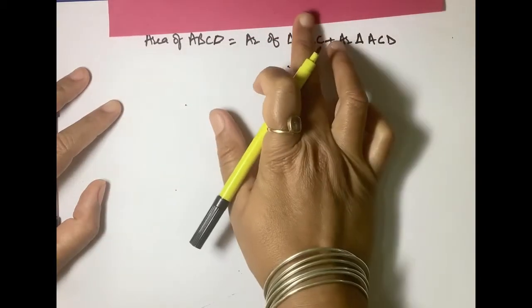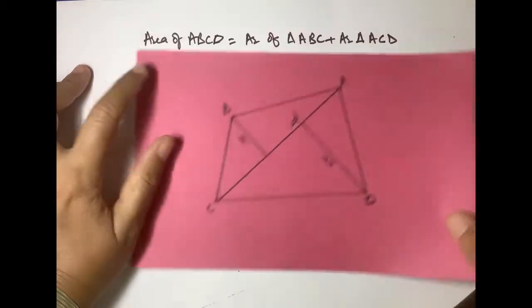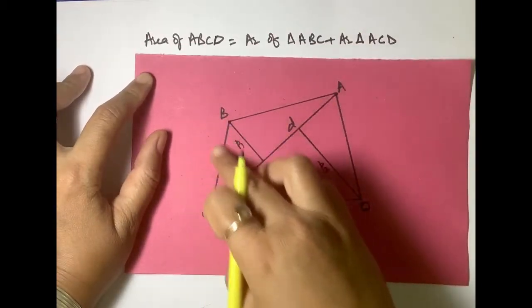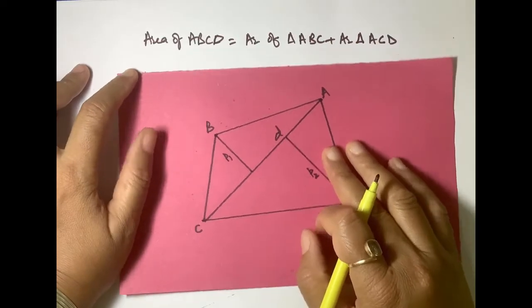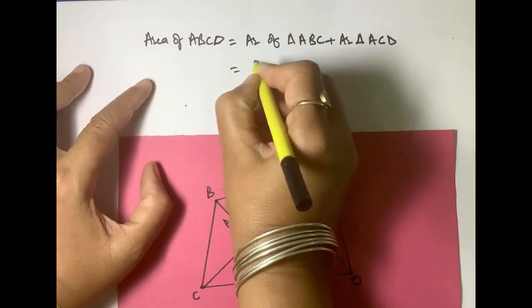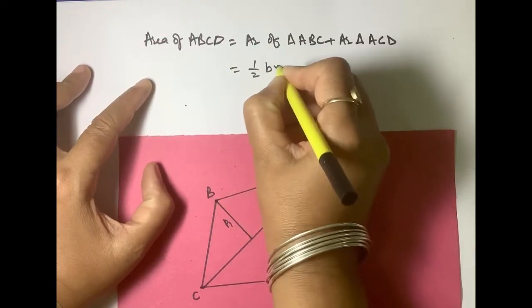In my previous videos we have learnt how to calculate the area of triangle. Area of triangle was half of the base into height.